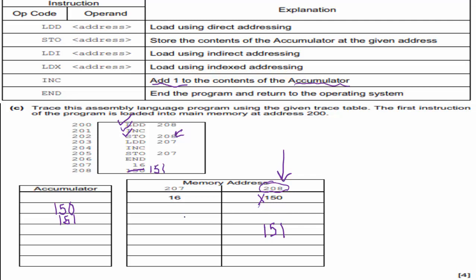LDD 207: address 207 holds 16, so I load that into the accumulator and check it off. Then increment — not a problem, that gives 17. Then store into address 207: we store 17. Just like that we are done, because the next line is END — nothing happens — and we just picked up four points on our Cambridge exam.